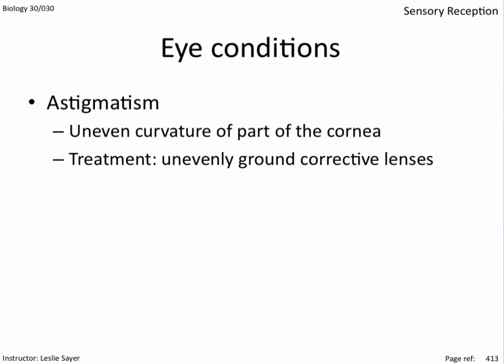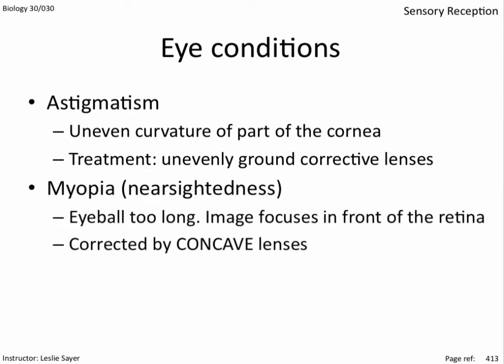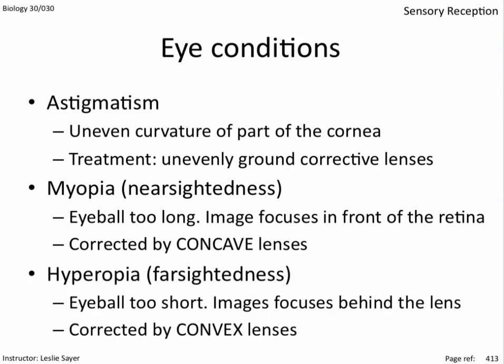Astigmatism is an uneven curvature of part of the cornea; treatment involves unevenly ground corrective lenses. Myopia, or nearsightedness, is where the eyeball is too long and the image focuses in front of the retina, corrected by concave lenses. Hyperopia, or farsightedness, is where the eyeball is too short; the image focuses behind the retina and is corrected by convex lenses.